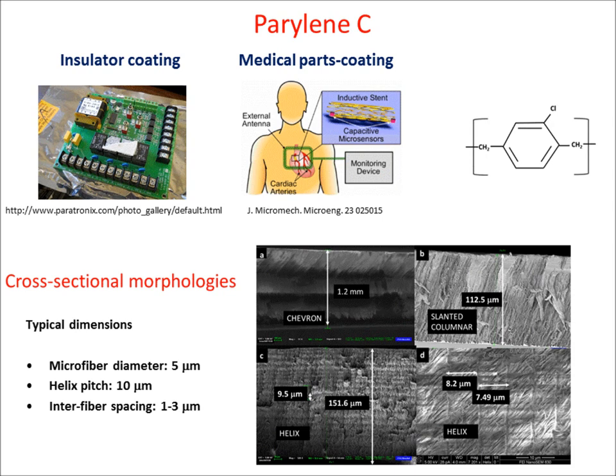The common cross-sectional morphologies achievable by us are columnar, straight and slanted, chevronic, and chiral, as shown in the SEM images. These films comprise microfibers of diameter 5 microns and a minimum thickness of 30 micrometers. We call them microfiber thin film substrates in this paper. For this presentation, I will call them by a new name: MIMUM, plural MIMUMs. MIMUM stands for microfibers multifunctional metamaterial.